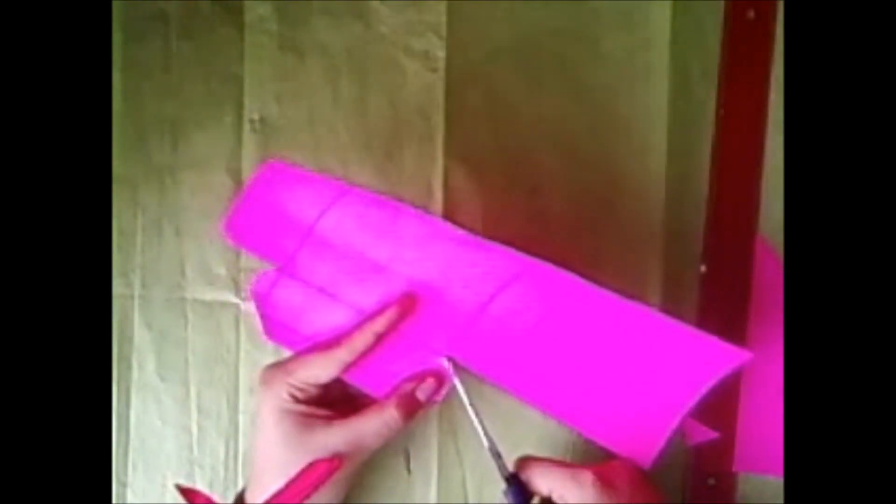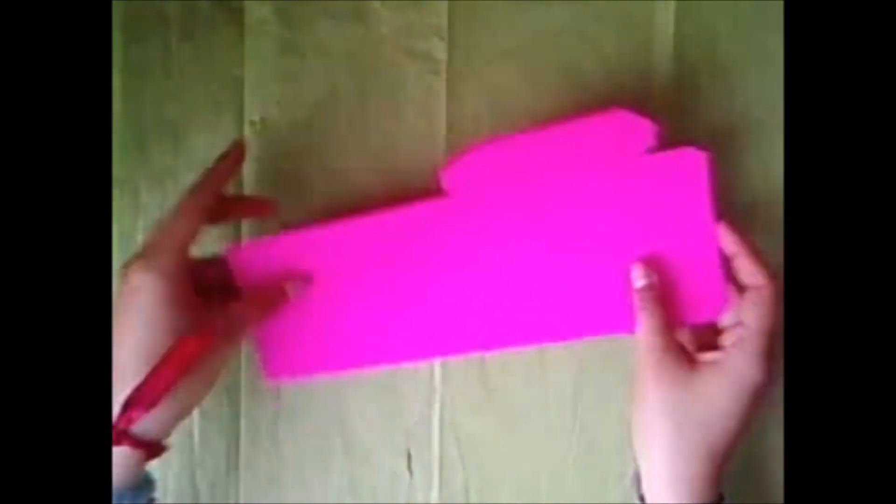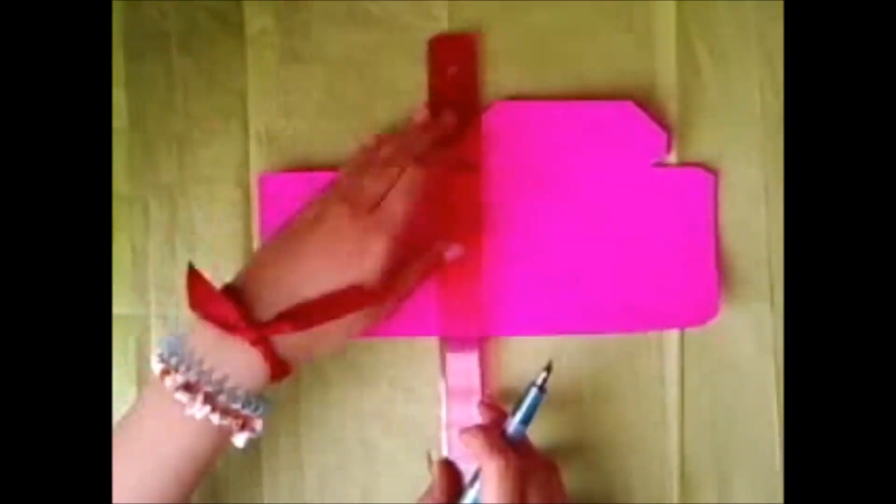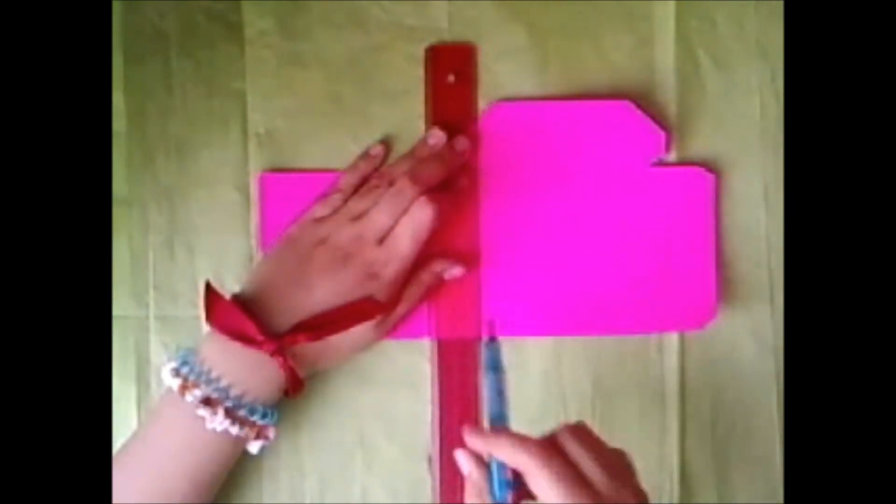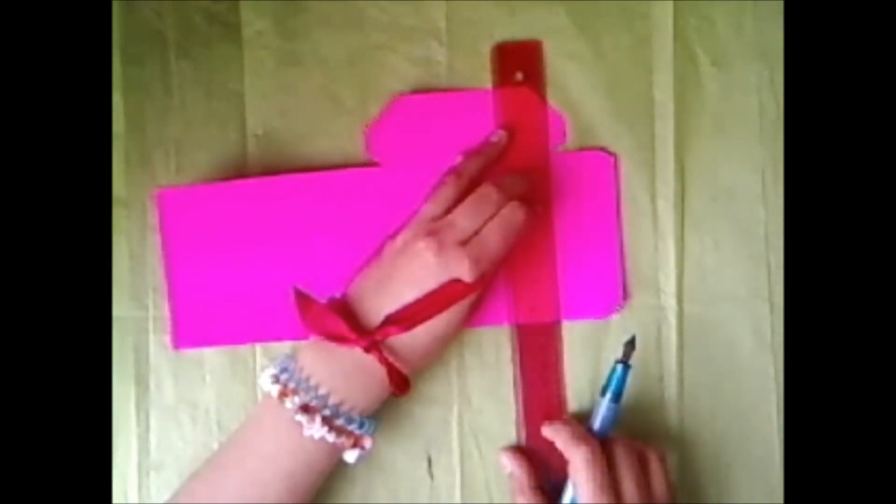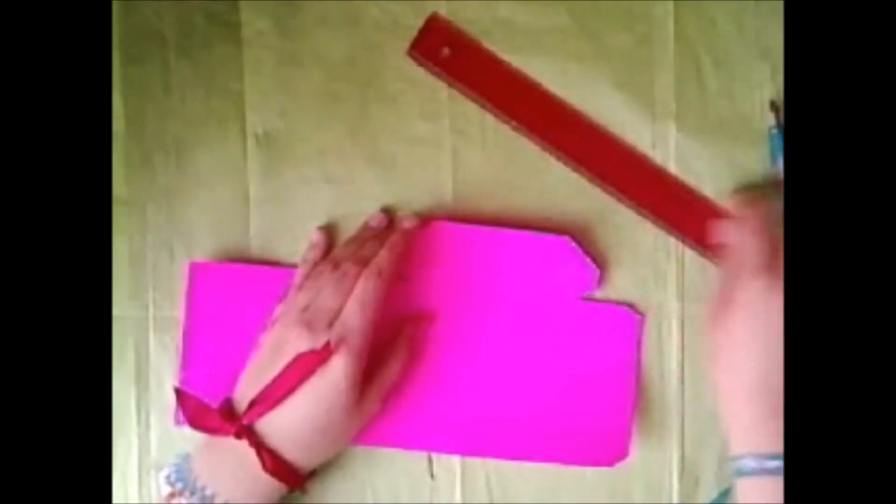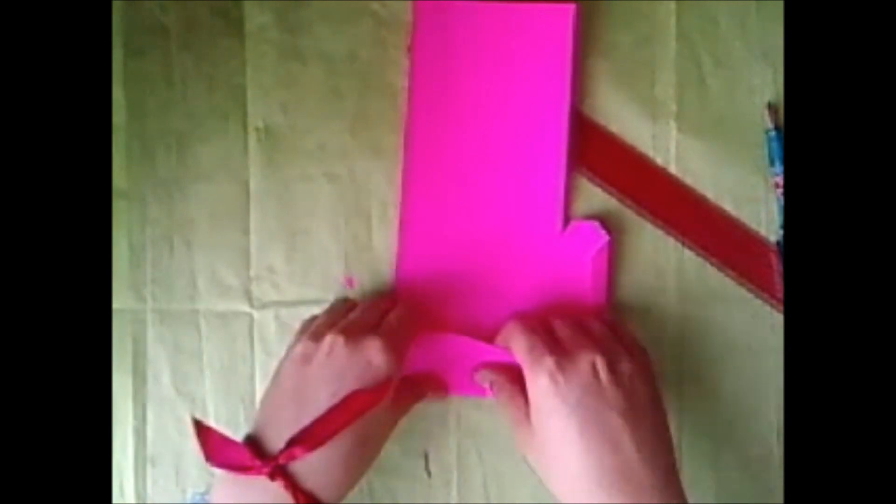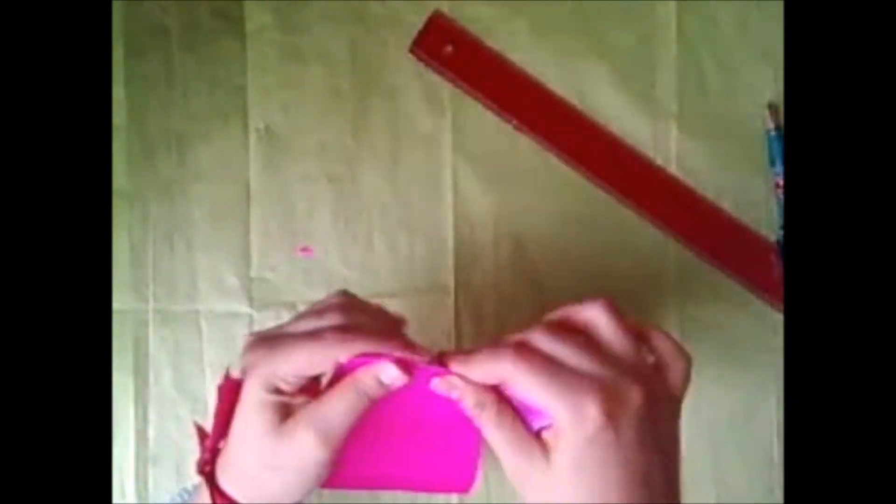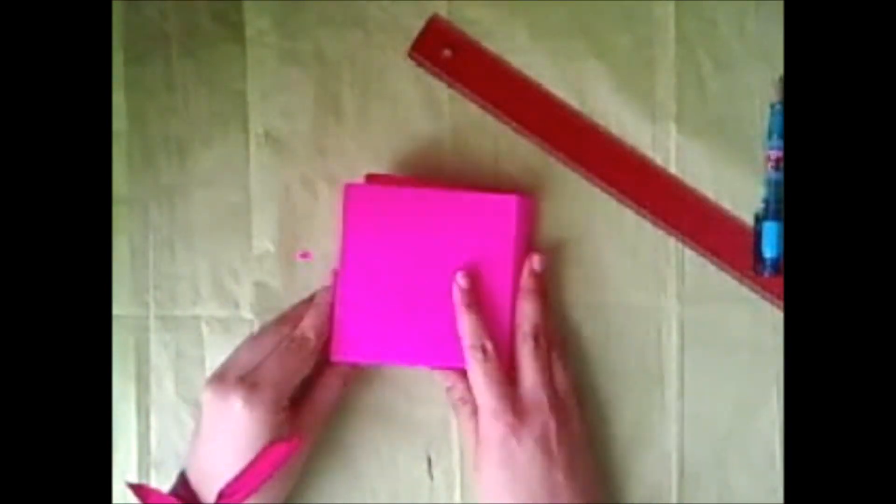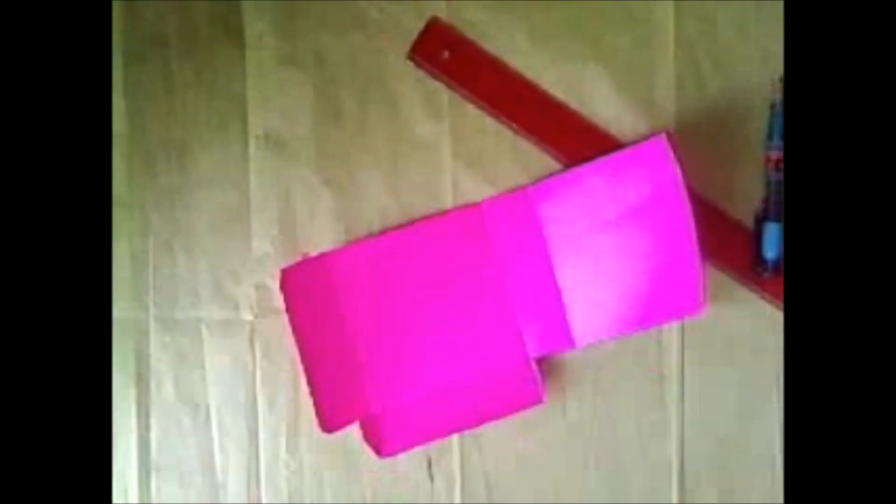Estos sobrantes no los botes, te pueden servir para decorar otra manualidad. Ahora que tengas una figura así, con algo de punta redonda y ayudándonos con la regla, vamos a marcar los pliegues. Y ahora simplemente doblaremos. Ya tenemos nuestra primera figura.